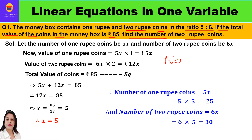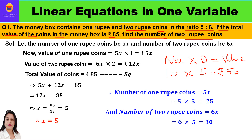There is one thing called number of coins, there is another thing called denomination, and the product of number and denomination gives us the value of money we have. For example, if I have 10 coins of 5 rupees each, the value I am having is 50 rupees. If I have 5 coins of 2 rupees each, I am having 10 rupees.